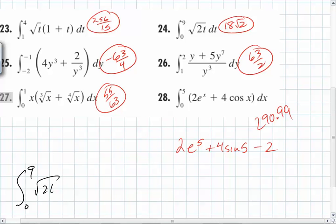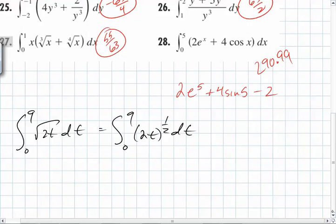Let's evaluate the integral from 0 to 9 of the square root of 2t dt. The way you can think of that is it's 0 to 9 of 2t to the 1 half dt.